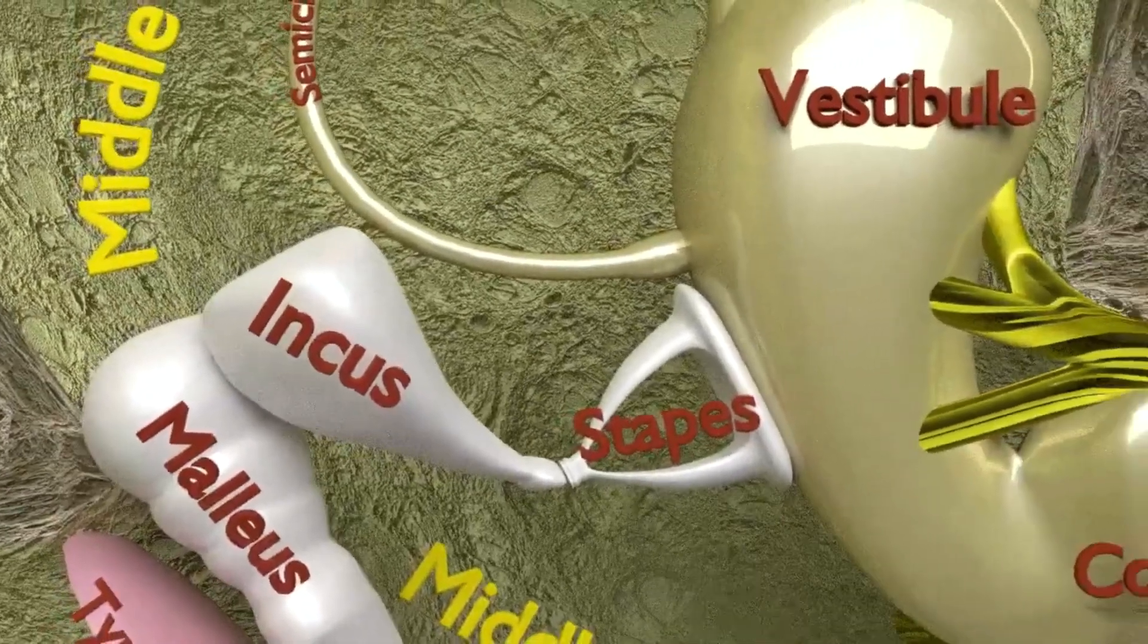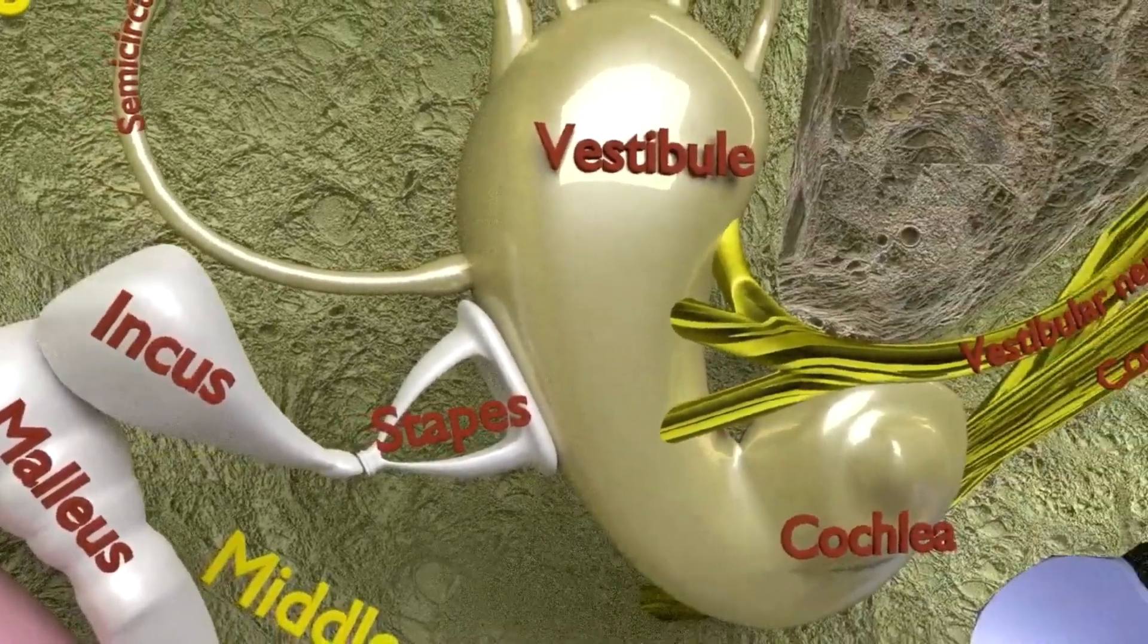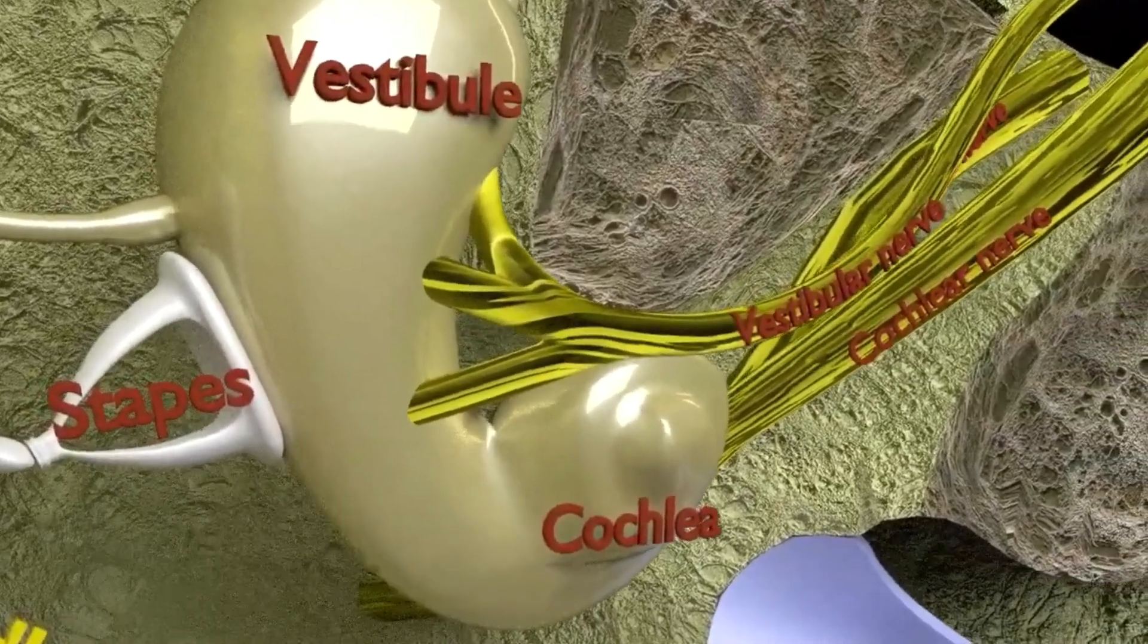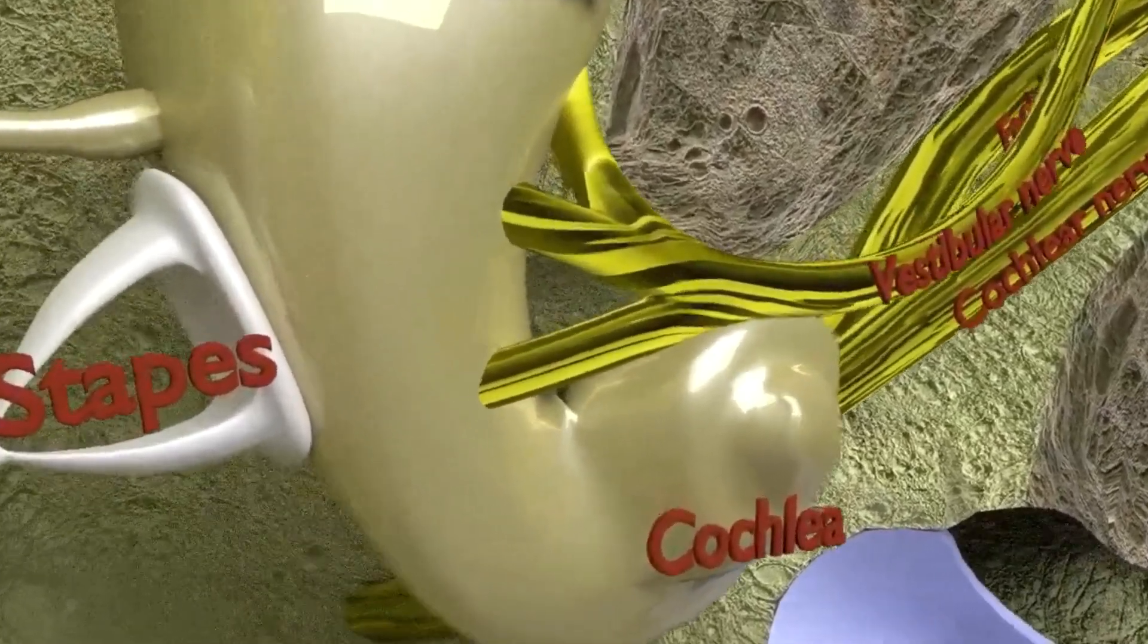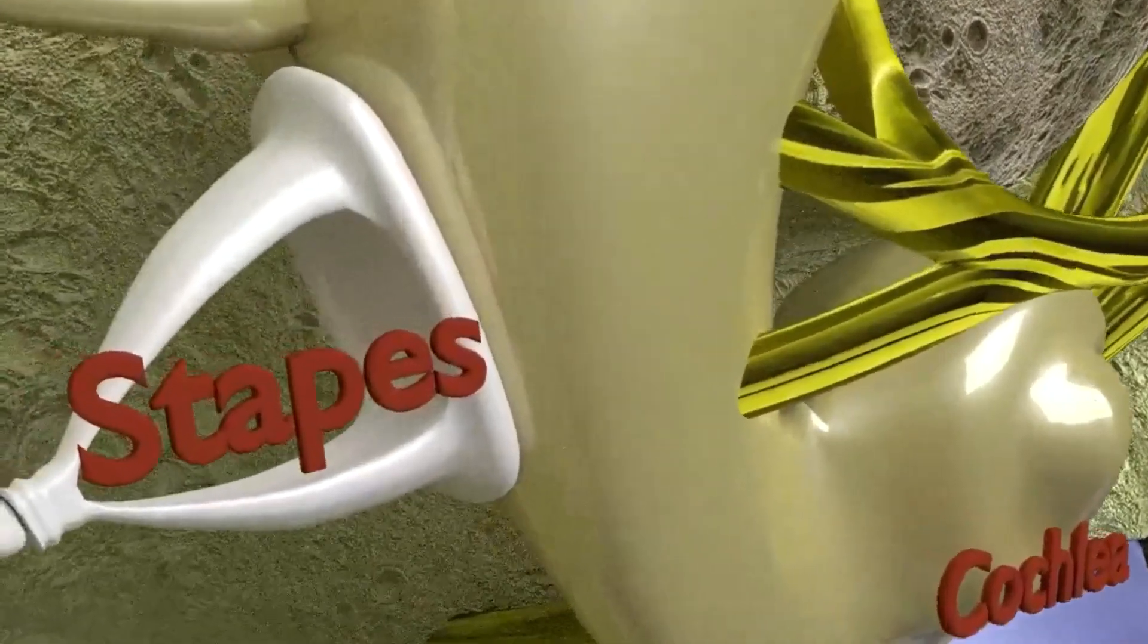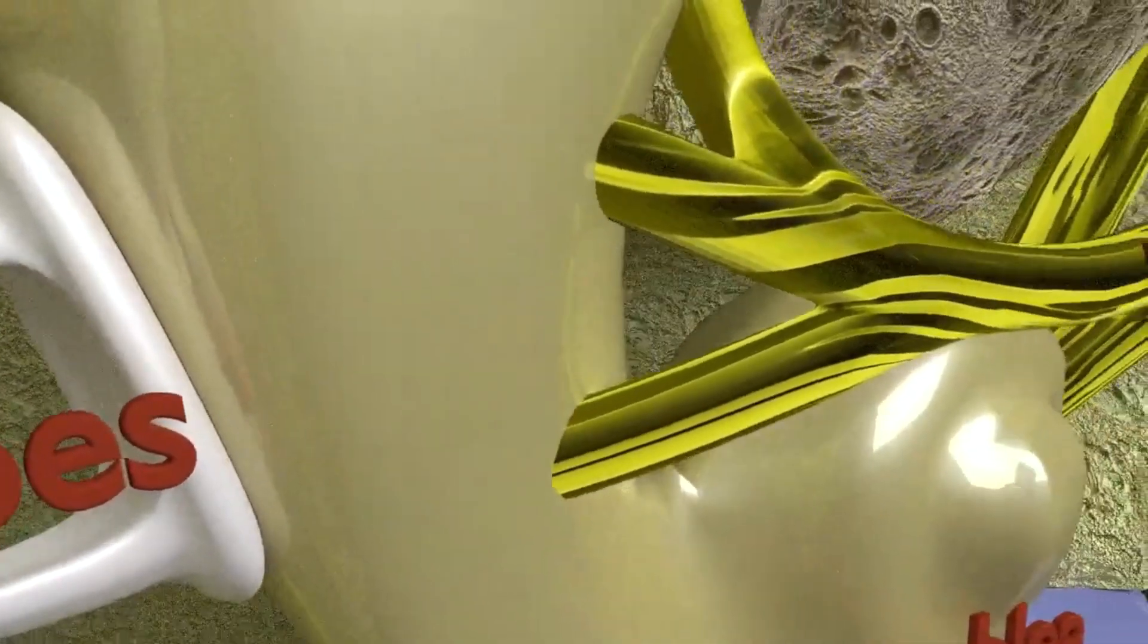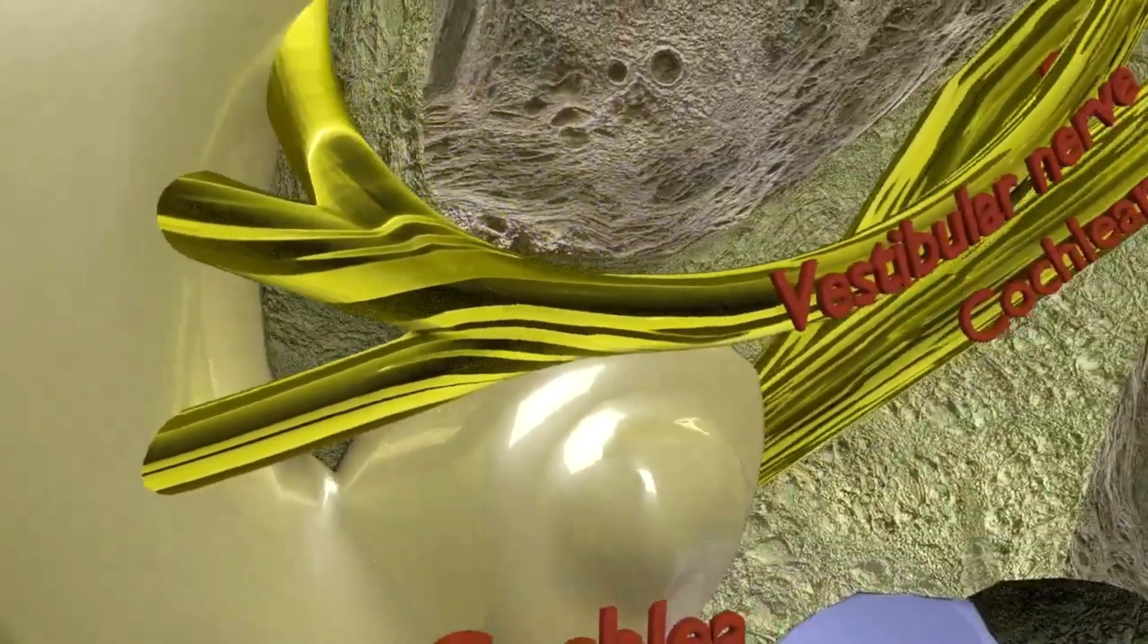These bones form a bridge between the eardrum and the inner ear through the oval window that covers the cochlea. They function together to receive, amplify, and transmit the sound from the eardrum to the inner ear.